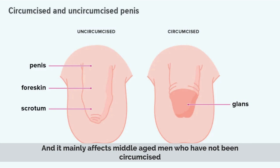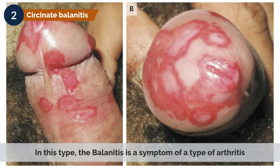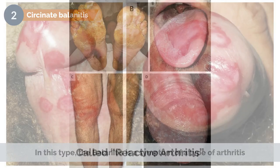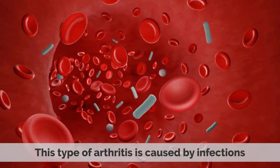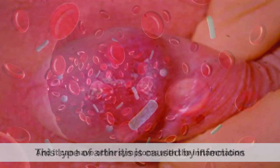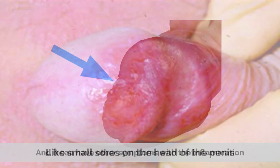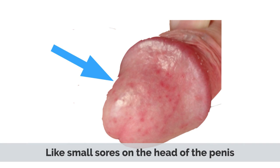The second type is Circinate balanitis. In this type, the balanitis is a symptom of a type of arthritis called reactive arthritis. This type of arthritis is caused by infections, and it can have other symptoms with the inflammation, like small sores on the head of the penis.